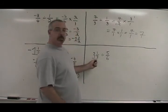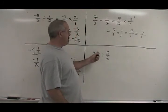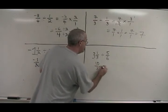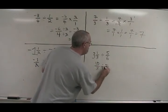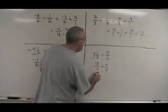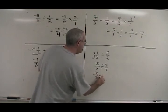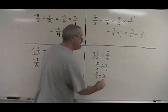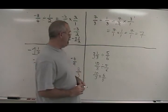Here we have another mixed number. 3 times 3 is 9 plus 1 is 10. 10 thirds divided by 5 sixths is the same as 10 thirds times 6 fifths. Second fraction turned upside down. We multiply instead.